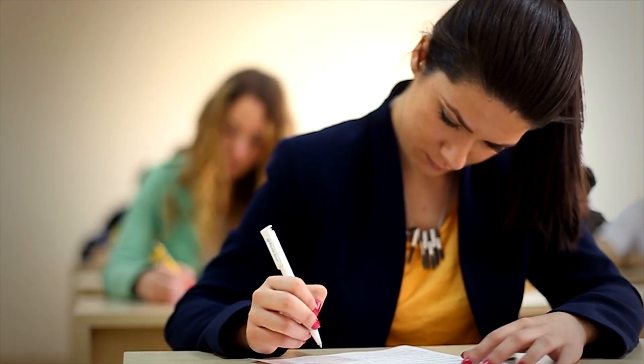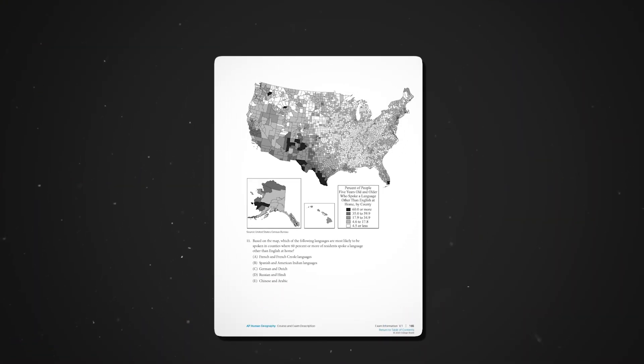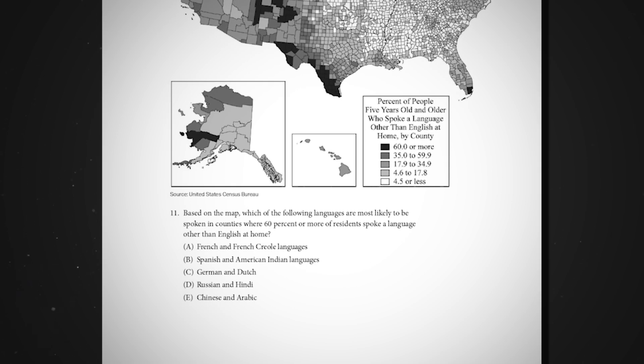When you see a stimulus question, do these steps in this order, and I assure you that you will not only start getting more questions right, but you will actually save time and answer more questions quicker. When you come across a stimulus question, the first thing you need to do is read the title, the legend, the source, and any other supporting information of the stimulus. While reading these parts of the stimulus, make sure you underline any key bits of information that you believe to be important.